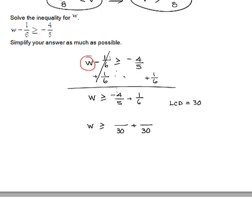In order to take 4 fifths, I needed to multiply this number by 6, so I multiply the numerator by 6, giving me negative 24. For 1 sixth, I needed to multiply it by 5. 6 multiplied by 5 gives me 30, so I multiply the numerator by 5, and I get 1 times 5 is 5. Now I can combine them because they have the same denominator.